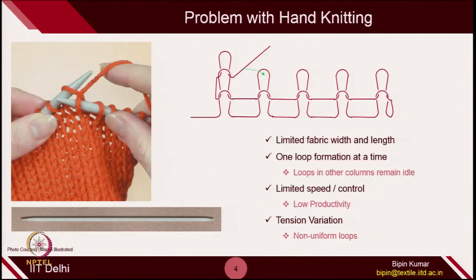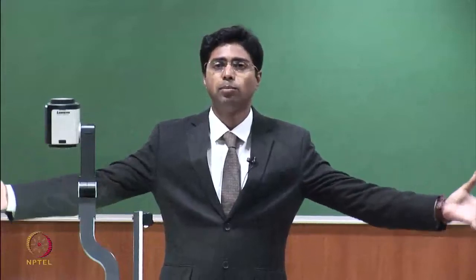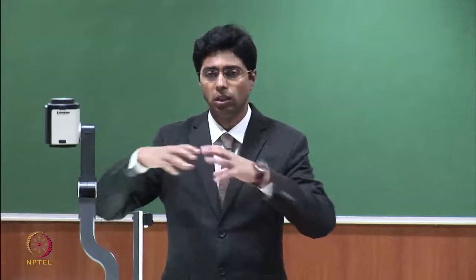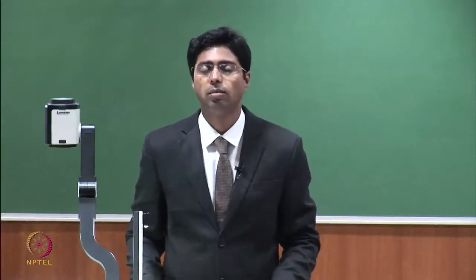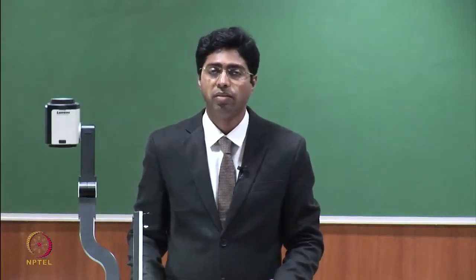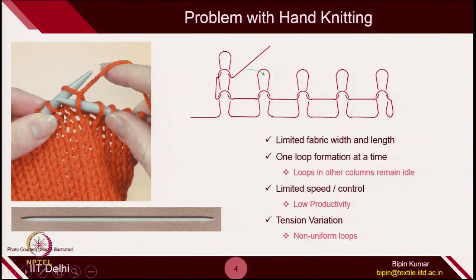The problem with hand knitting is it has limited fabric width and length capabilities, because our hands are very limited. We cannot create a fabric more than 2 meters in length because it is very difficult to control bigger lengths or widths. The other big problem is we are doing loop formation one at a time. Once a loop is being formed in the first column, the second loop is getting formed in the second column in series. The columns of loops remain idle except the one being used, so the production speed is extremely limited.